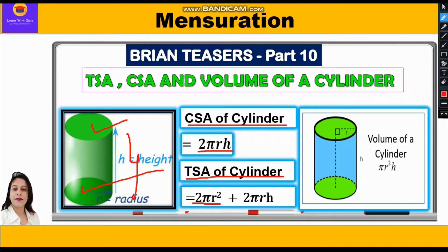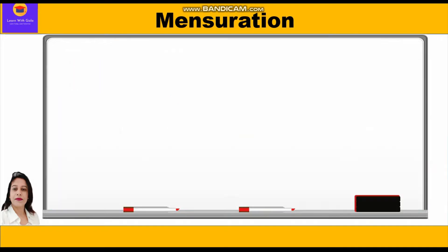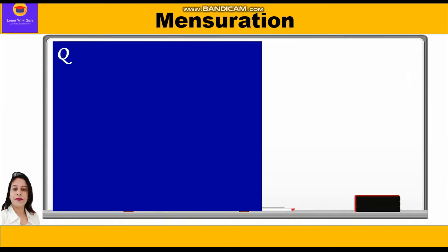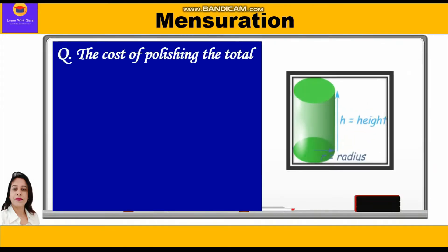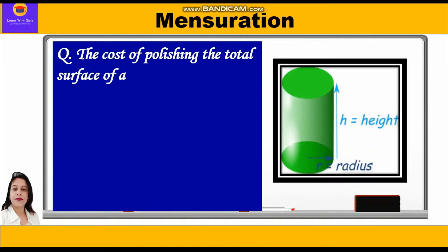So the total surface area formula is 2πr² + 2πrh. For the volume of a cylinder, it is the area of the base into height. Since the base is circular, the formula is πr²h. Now let's start with the question.